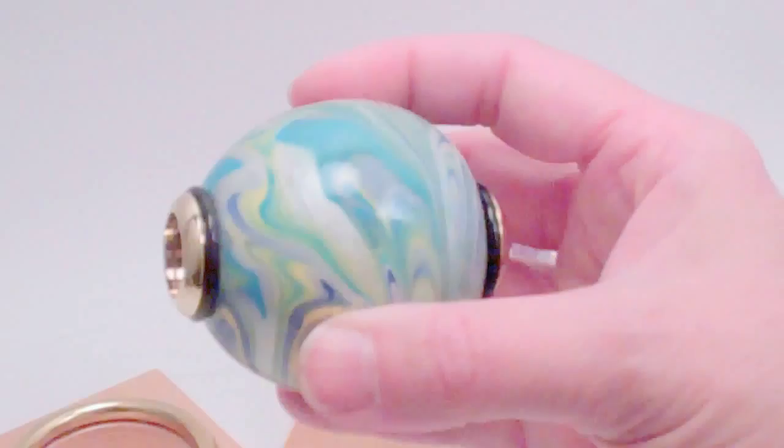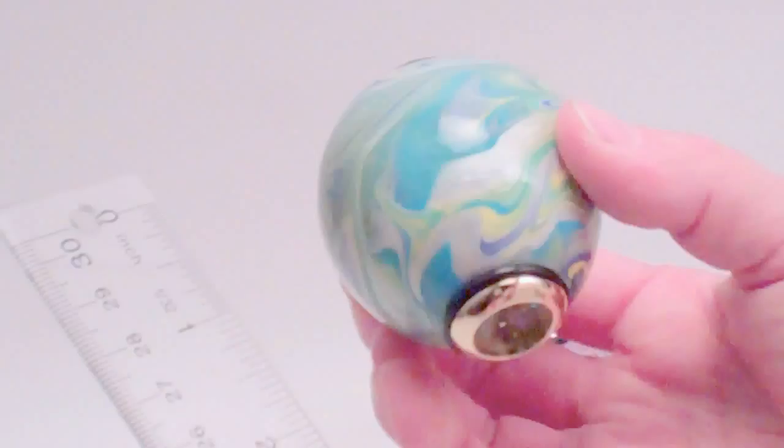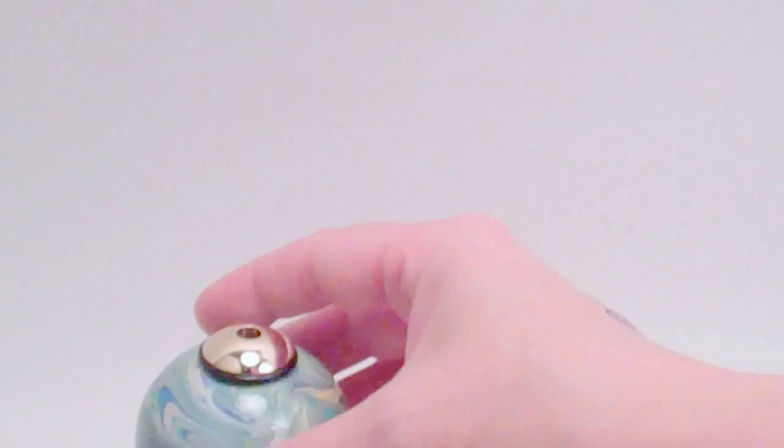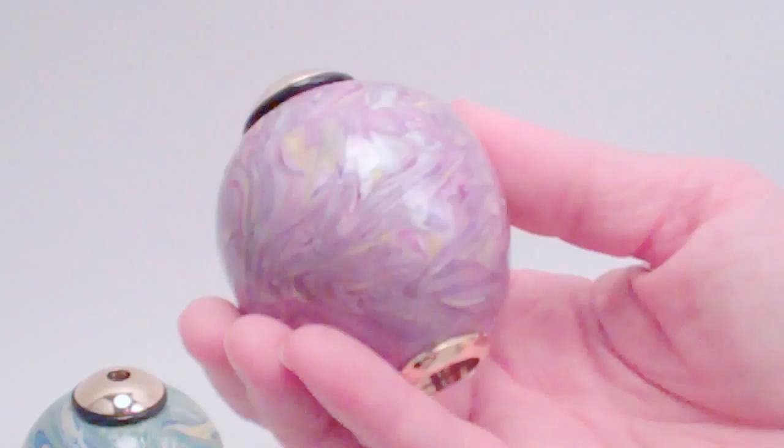This one has an overall length of 2¾ inches and a diameter of just over 2 inches. This one features some plum and lavender colors along with a bit of the pearl and the yellow, the maize yellow.